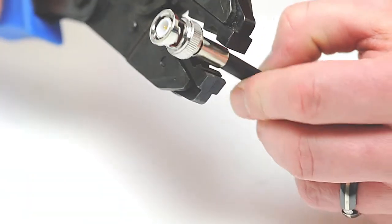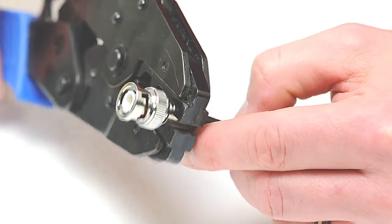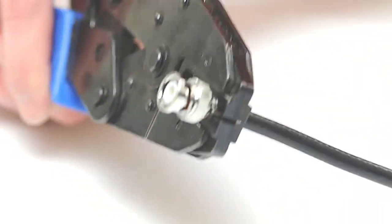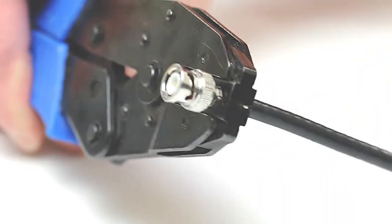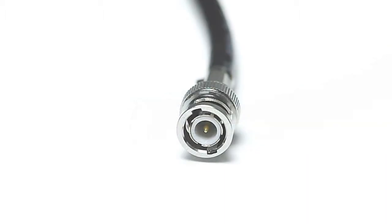Take your crimp tool and crimp the ferrule onto the jacket. This will create a secure connection. Give it a tug for testing to make sure it's properly seated. Now you've successfully terminated a male BNC connector.